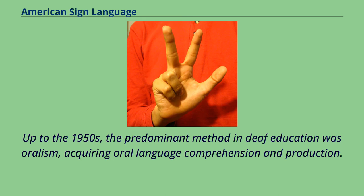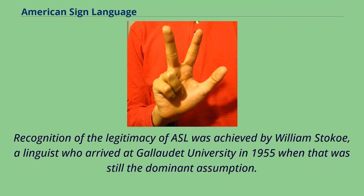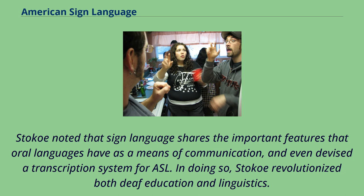Up to the 1950s, the predominant method in deaf education was oralism, acquiring oral language comprehension and production. Linguists did not consider sign language to be true language but as something inferior. Recognition of the legitimacy of ASL was achieved by William Stokoe, a linguist who arrived at Gallaudet University in 1955. Aided by the civil rights movement of the 1960s, Stokoe argued for manualism, the use of sign language in deaf education. Stokoe noted that sign language shares the important features that oral languages have as a means of communication, and even devised a transcription system for ASL, revolutionizing both deaf education and linguistics.